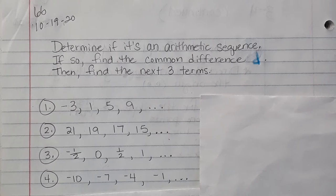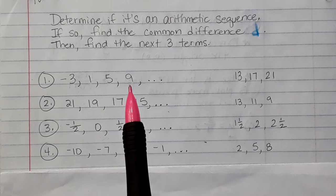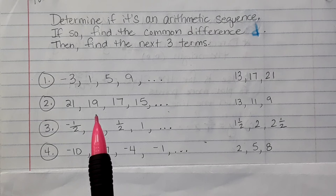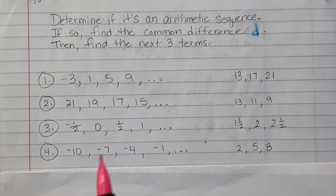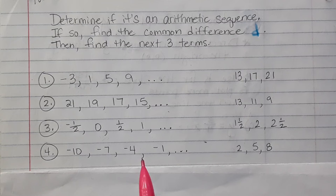If you have not done so already, please make sure you pause here to try them first, and then let's take a look. These would be the next three terms. The common difference is 4, so I would find the next three terms. Here, the common difference is negative 2. Find the next three terms. In this one, the common difference is 1 half. Those are the next three terms. And in this one here, the common difference is positive 3, and then the next three terms.